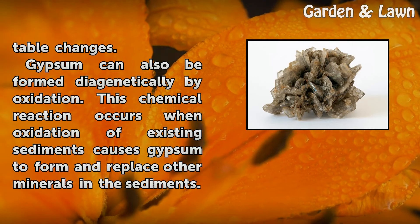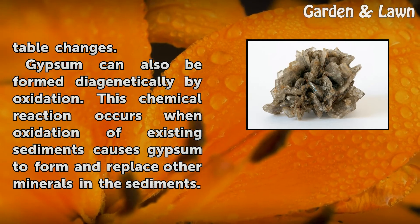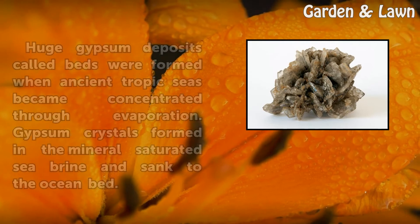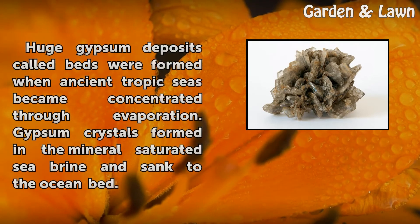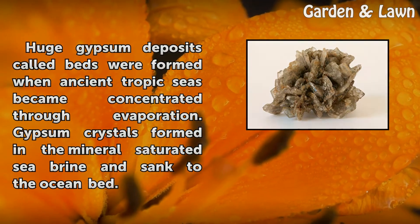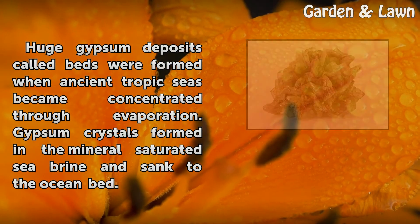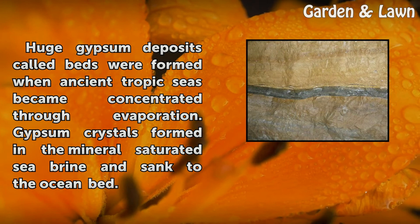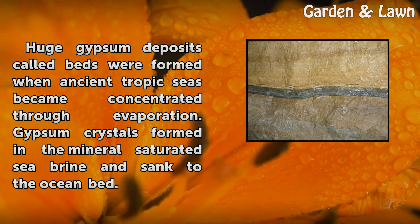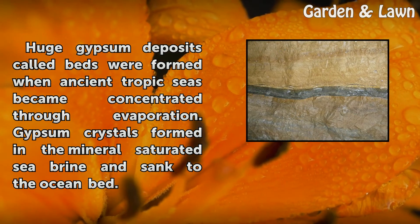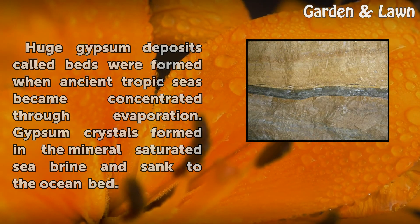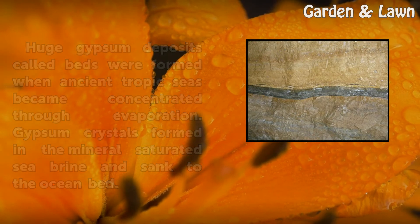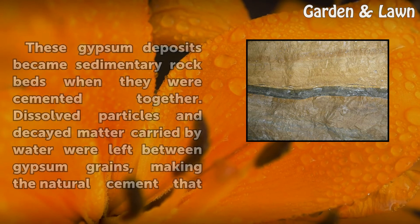Gypsum can also be formed diagenetically by oxidation. This chemical reaction occurs when oxidation of existing sediments causes gypsum to form and replace other minerals in the sediments. Huge gypsum deposits called beds were formed when ancient tropical seas became concentrated through evaporation.